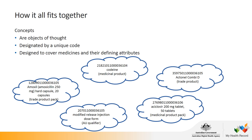At the bottom, we have a modified release injection dose form concept, which is a qualifier used to help define a concept. And finally, we have a concept that describes a trade product pack. Each of these concepts has a unique code to help machines identify it, plus a human-readable description.